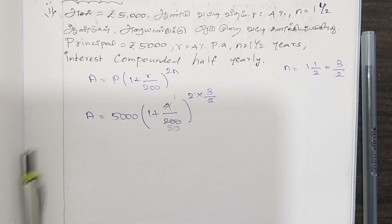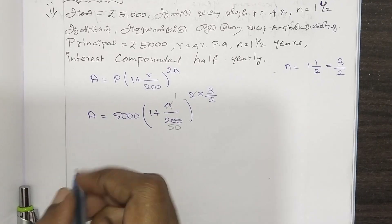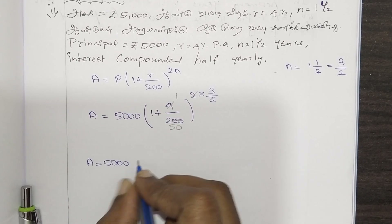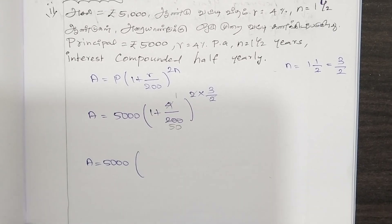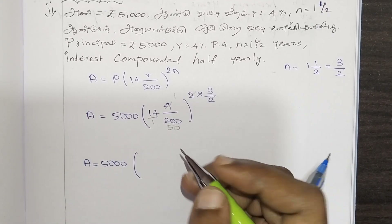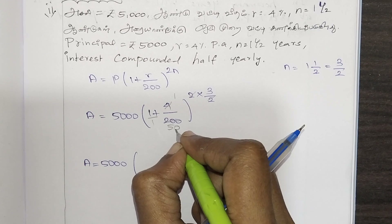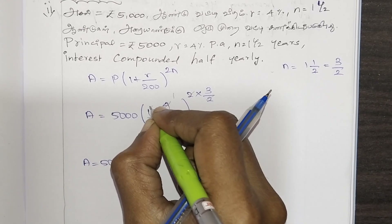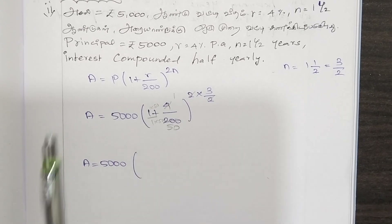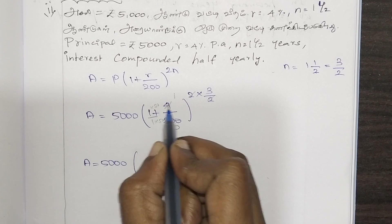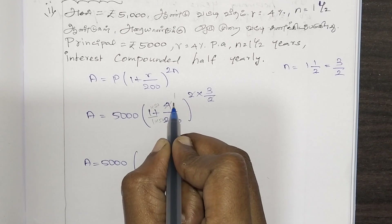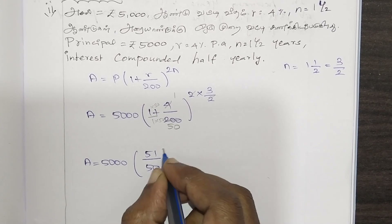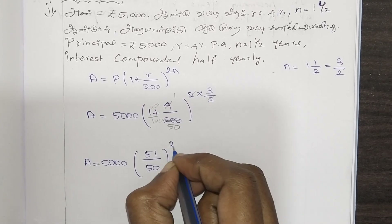4 by 200 simplifies: 4 into 50 is 200. A equals 5000 into 1 plus 1 by 50, which is 51 by 50, whole power 3. Because the 2 and 2 cancel, giving us power 3.